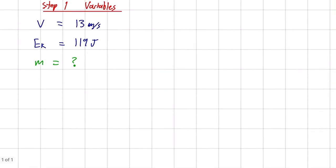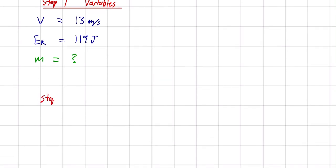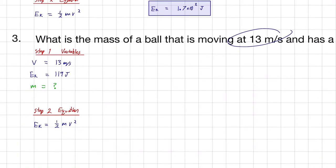Now step two is going to be to pick an equation that we're going to use. So, looking at our three variables here, we know an equation, and that is that the kinetic energy is equal to one-half times mv squared. This is going to be an equation that we're going to use moving forward.